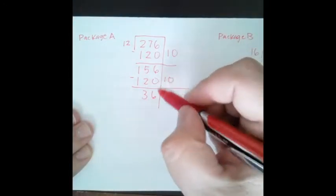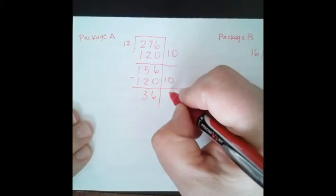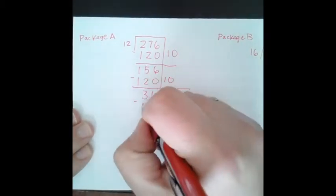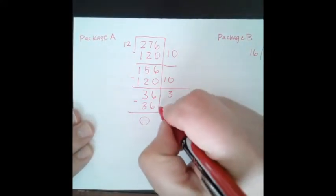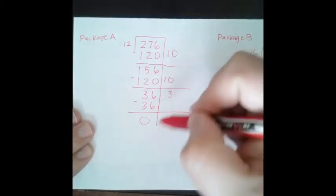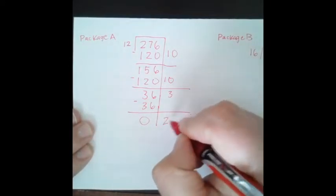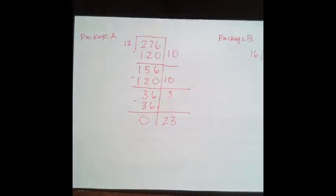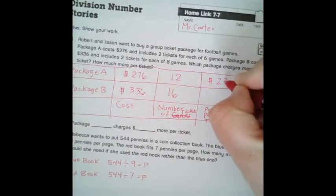So again, we subtract. 6 take away 0 is 6. 5 take away 2 is 3. So now I know that it's 36. So I know in my head that 3 times 12 will get me 36. So I'm going to go ahead and put 3 times 12 is 36. Now we hit our 0, and we're going to add our side thing because we can't divide anymore. So 10 plus 10 is 20 plus 3. So it's 23. So for package A, it's going to cost $23 per ticket.